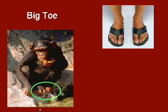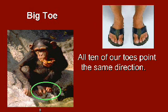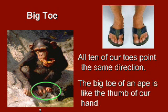Here's another really easy one — all you've got to do is take off your shoes. Human toes point the same way. But an ape, if you notice, on their foot their big toe is opposable — it's like a thumb.